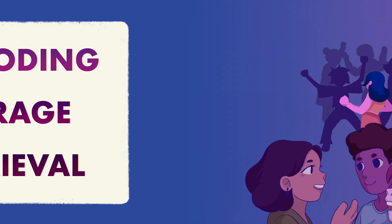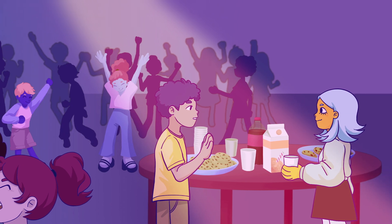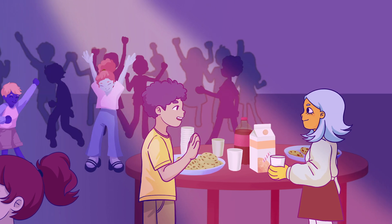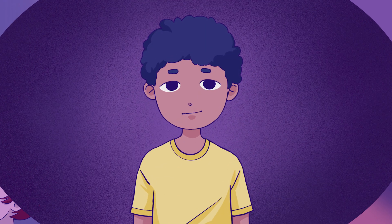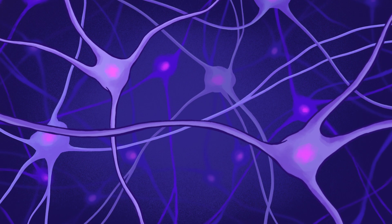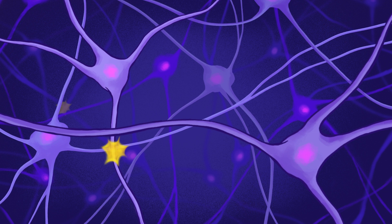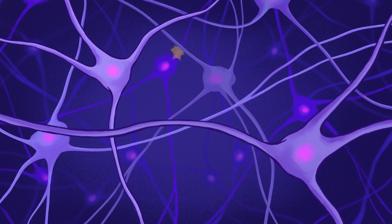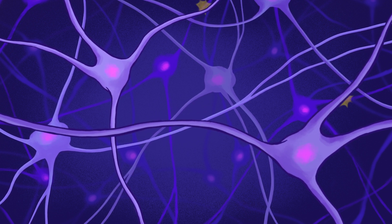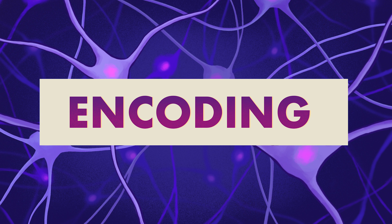When you learn something new or have a new experience — say you meet someone at a party — your brain takes this information, the person's face, the sound of their voice, and transforms it into a memory code: a pattern of activity in a network of nerve cells. This is known as encoding.